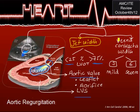The second parameter is vena contracta width. This is a physics term, though you will see it on echo. It indicates velocity through the orifice. If the vena contracta is less than 3 mm, it is mild aortic regurg. If it is greater than 6 mm, it is severe.